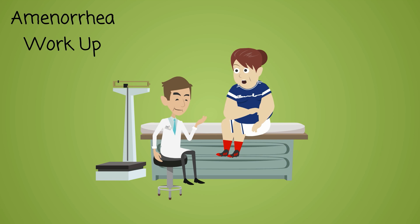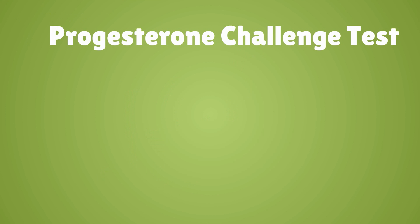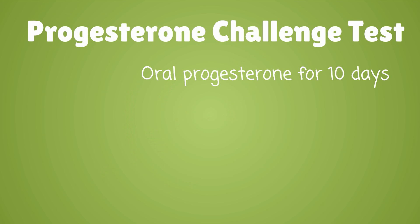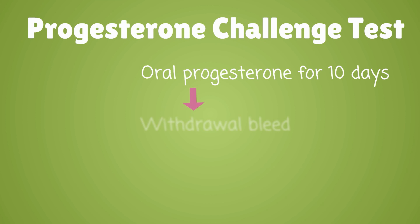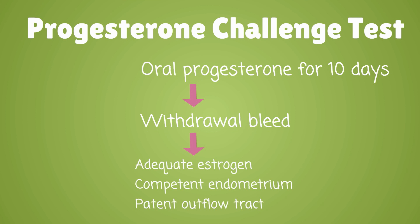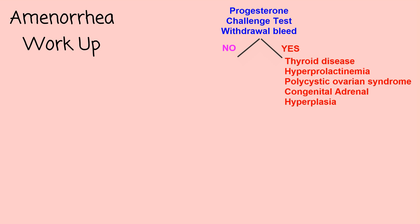The first step of treatment is to establish the cause of amenorrhea. Many physicians use the progesterone challenge test as the first step. A patient takes oral progesterone for ten days; after stopping, if she then has bleeding — referred to as a withdrawal bleed — this tells us she has adequate estrogen, a competent endometrium, and a patent outflow tract. If bleeding occurs, further workup should investigate causes like thyroid disease, hyperprolactinemia, polycystic ovarian syndrome, and congenital adrenal hyperplasia.